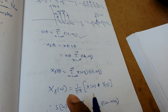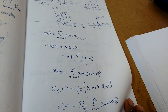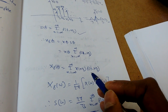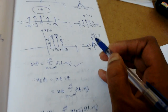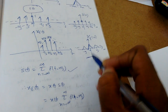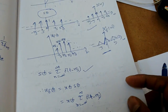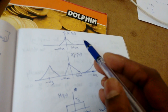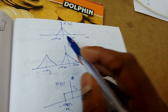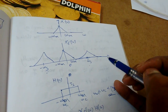The Fourier transform of x_delta(t) is the convolution of X(omega) with the Fourier transform of the impulse train. Whenever we convolve with a delta function we get a shifting version of the original spectrum. So X_delta(omega) consists of shifted copies of X(omega) centered at 0, omega_s, minus omega_s, and so on. If we multiply these two we get this spectrum as the final result.